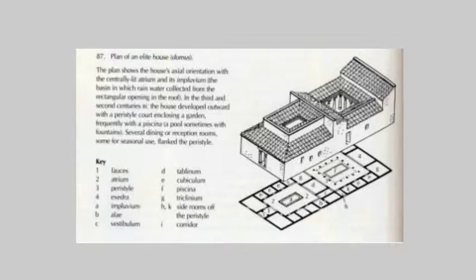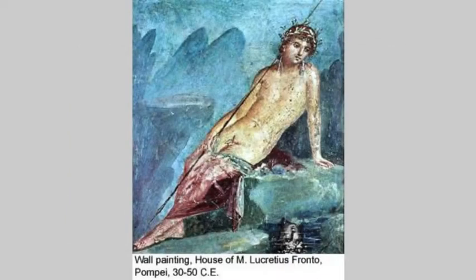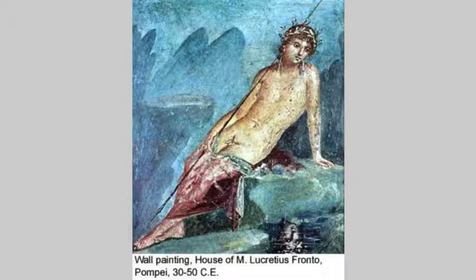The walls of these elite houses were covered in paintings, and we'll see a whole variety of them here. Here you have the figure of Narcissus from Greek mythology, gazing at his reflection in the pool — he was turned into a water flower for his excessive self-regard. The Romans were not prudish, and on these walls you would see nudes and also what we would regard as pornography, sexual scenes, in rooms both public and private.